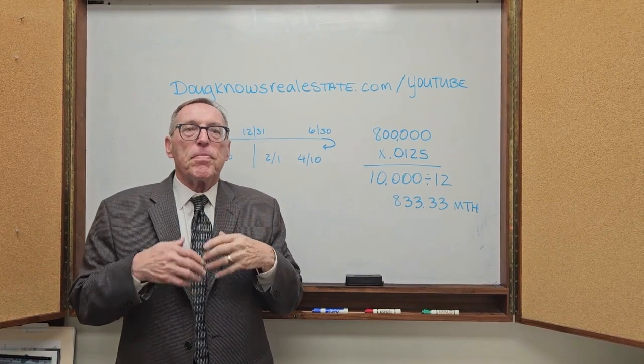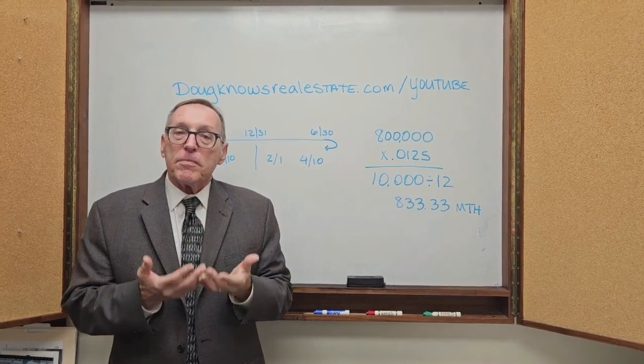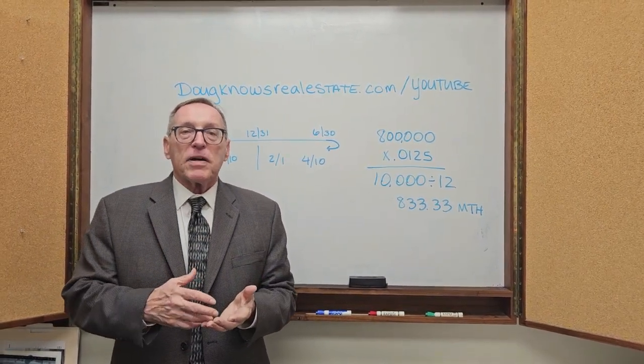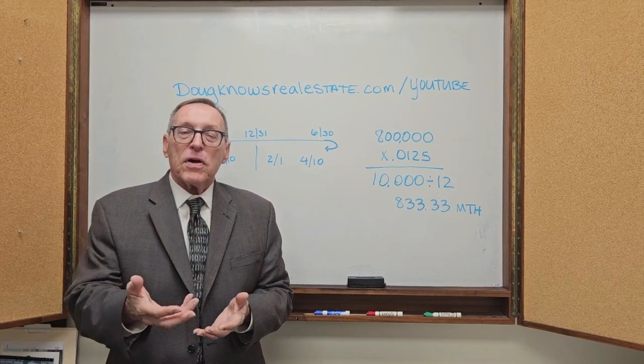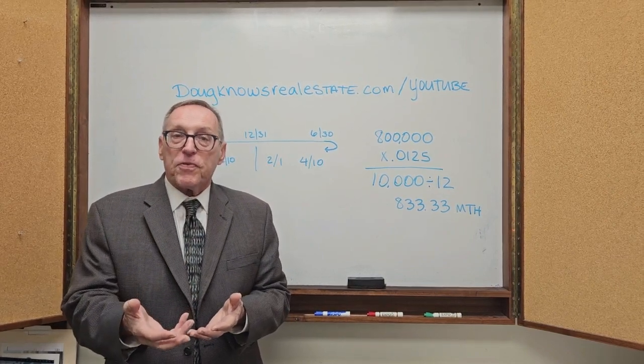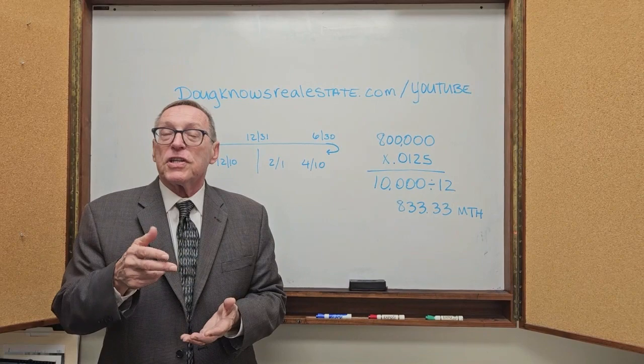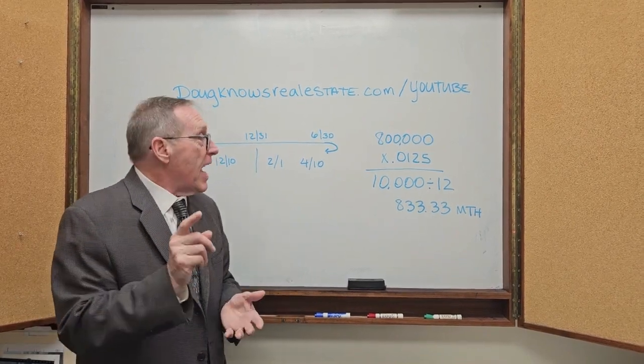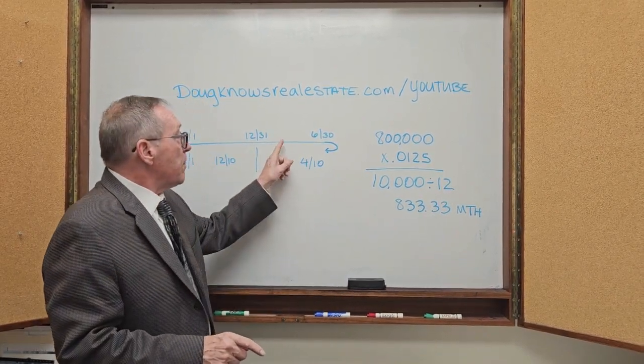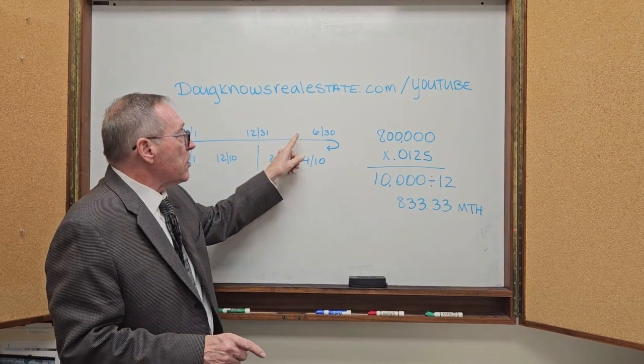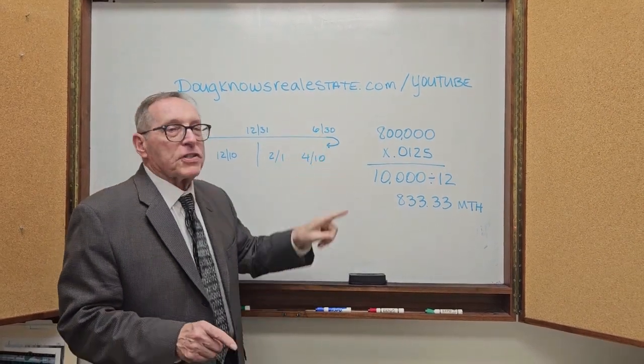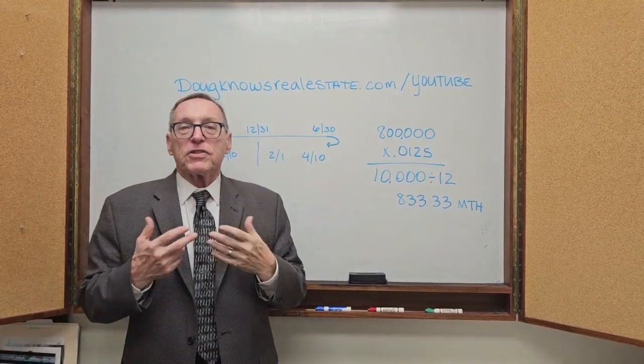Now if the person is buying and they're going to do an impound, the title company will take a full year of insurance payments up front and maybe one or two more months to set up for the impound. And the person will pay from the taxes from here to here plus they will pay an impound set up fee.